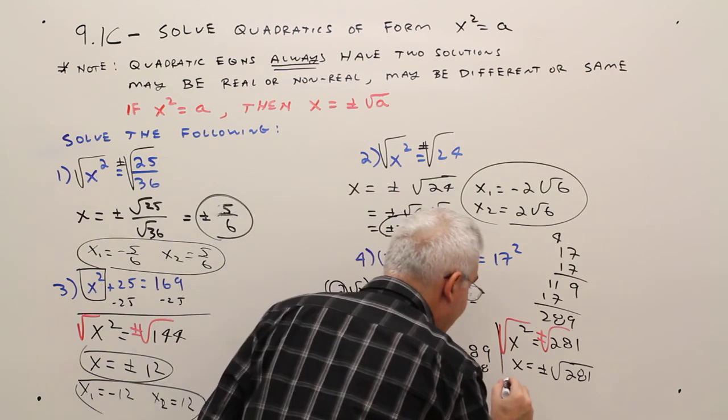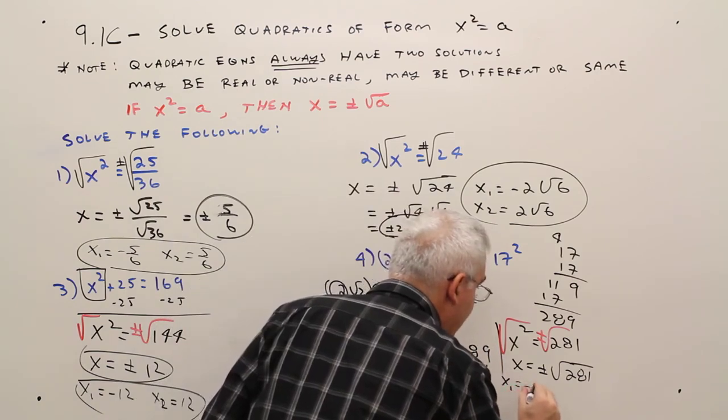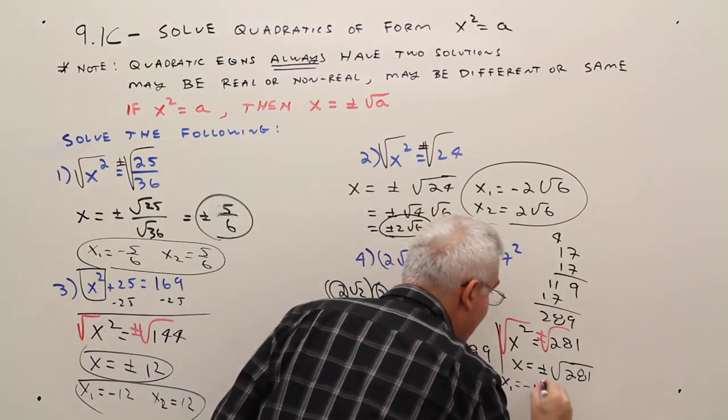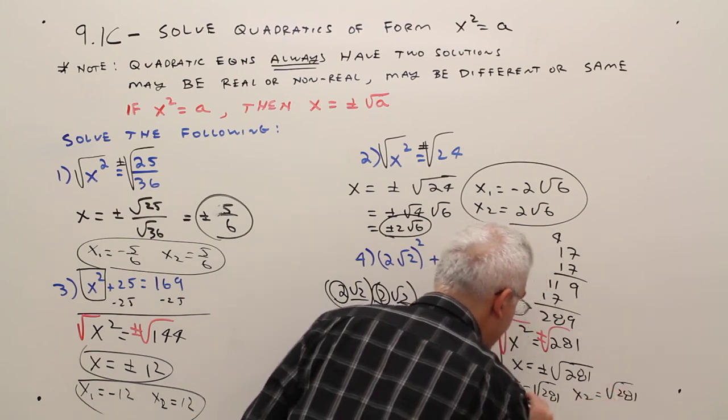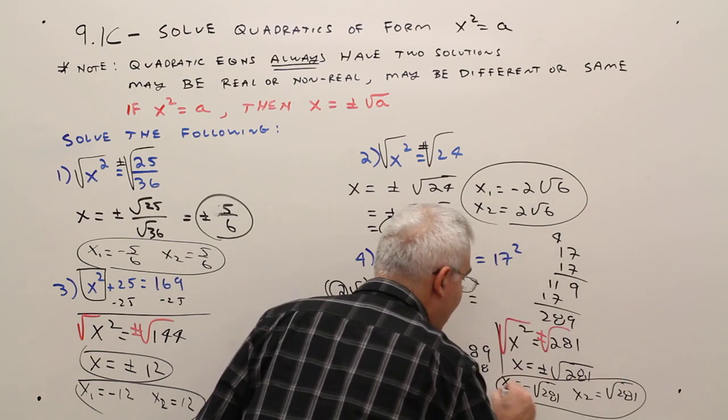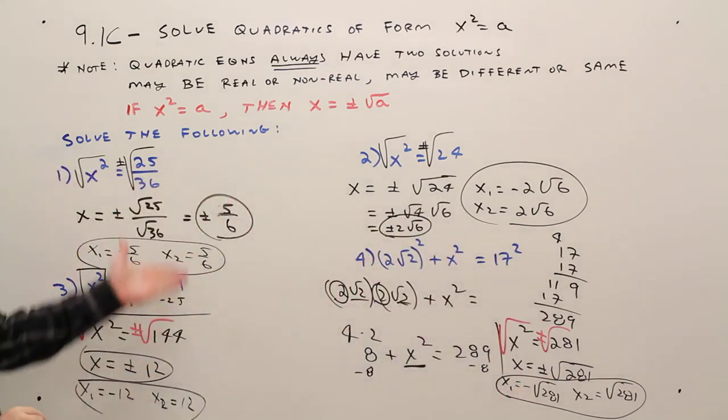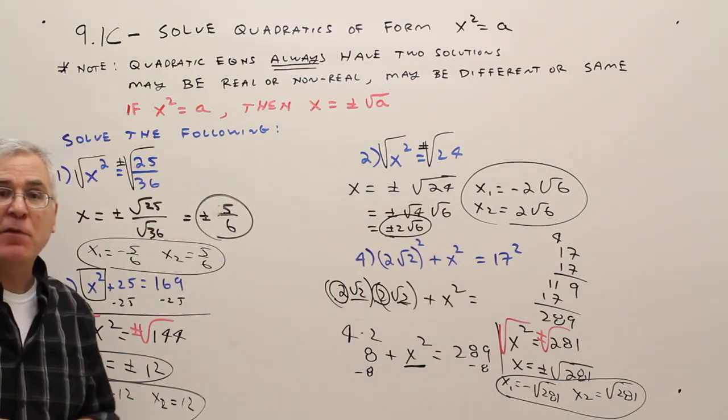And you can again report your answer as X sub 1 equals negative radical 281 and X sub 2 equals positive radical 281, or you can express it as plus or minus. So there you have it: four examples that solve a quadratic equation of the form X squared equals A.